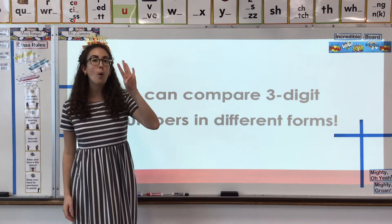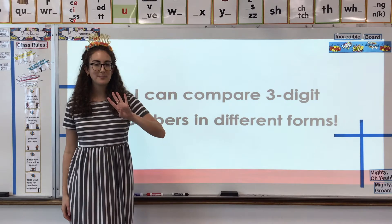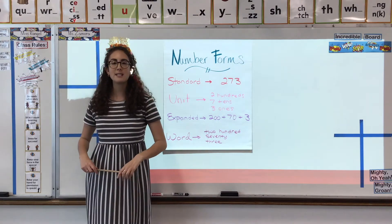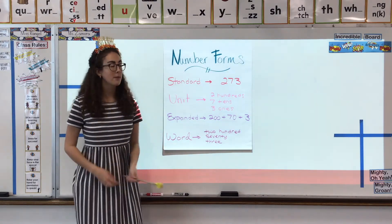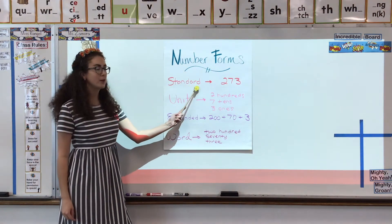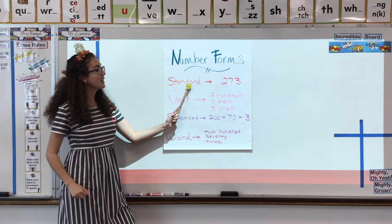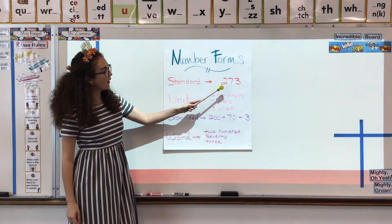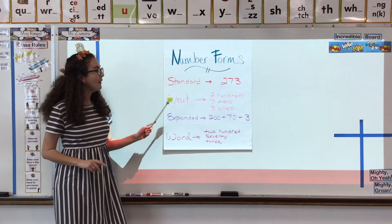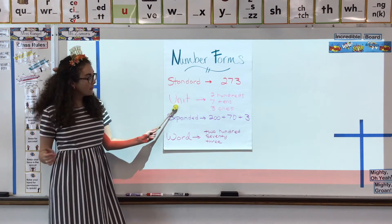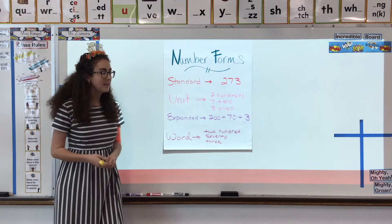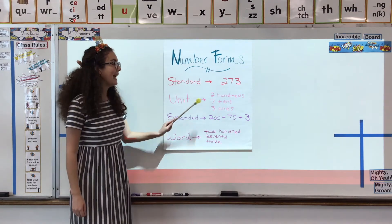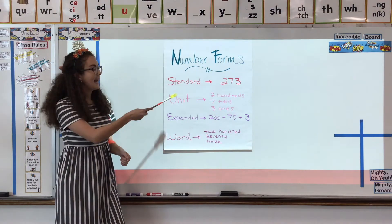So let's remind ourselves of the four different number forms we have learned. Here up on this colorful poster, you can see that there are four different ways to express a three-digit number. We've been working with standard form — that's when we only express numbers with digits. And then also we have unit form, which tells us how many of each unit are in this number: how many hundreds, how many tens, and how many ones.